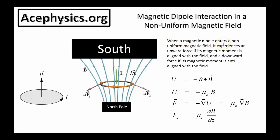When a magnetic dipole — which is a current loop or an electron — enters a non-uniform magnetic field, it experiences an upward force if the magnetic moment is aligned with the field, and a downward force if the magnetic moment is anti-aligned with the field. This comes from classical electricity and magnetism. The potential energy of a magnetic moment in a field is negative mu dot B, where mu is the dipole moment and B is the magnetic field. Objects always want to move to the lowest possible potential energy, so a current loop will be forced upward if the magnetic moment is parallel to the field, and downward if anti-parallel.